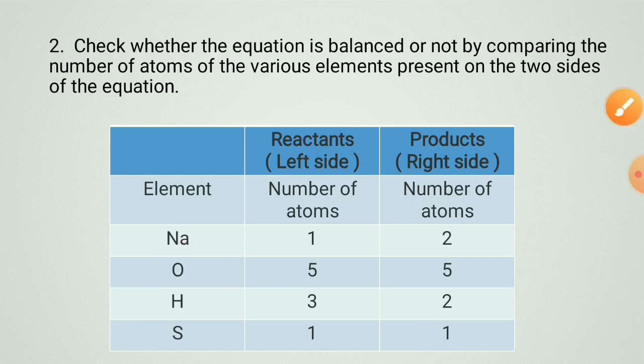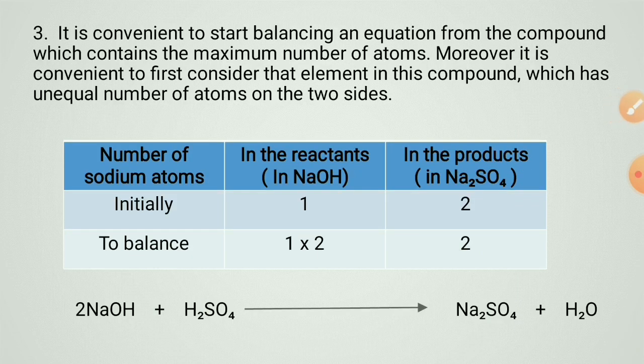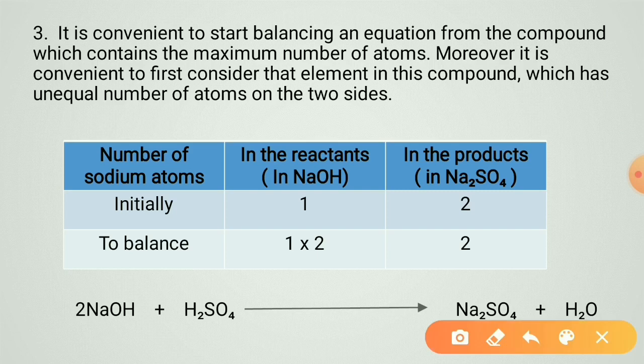Step 3: it is convenient to start balancing from the compound which contains the maximum number of atoms. Moreover, first consider the element in this compound which has an equal number of atoms on both sides. Here it is Na₂SO₄, so you multiply two on the reactant side to balance sodium.